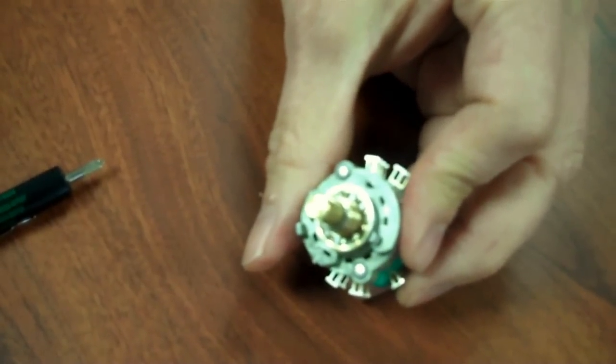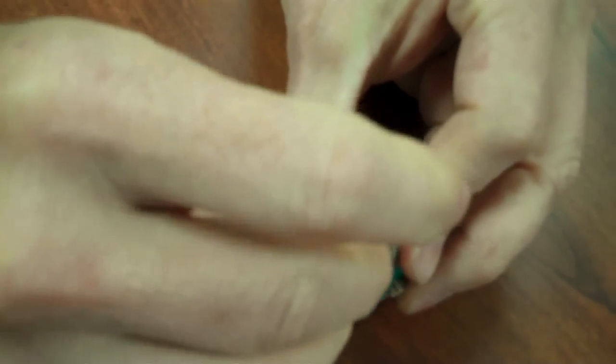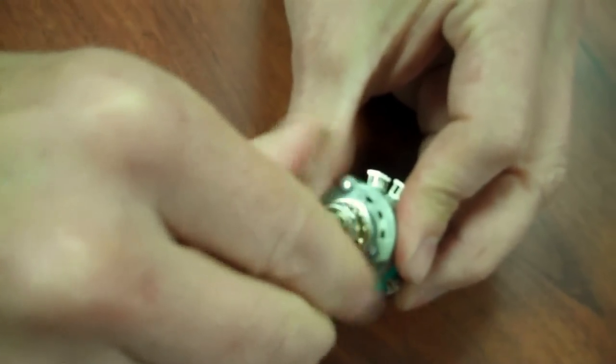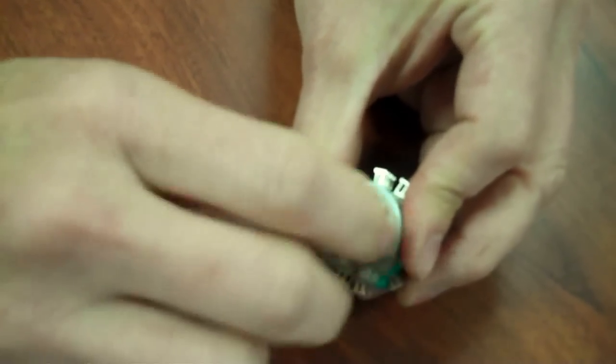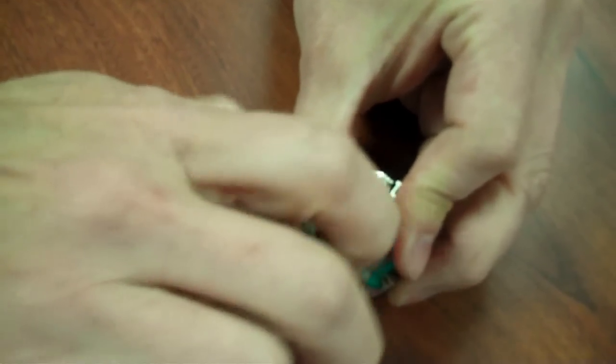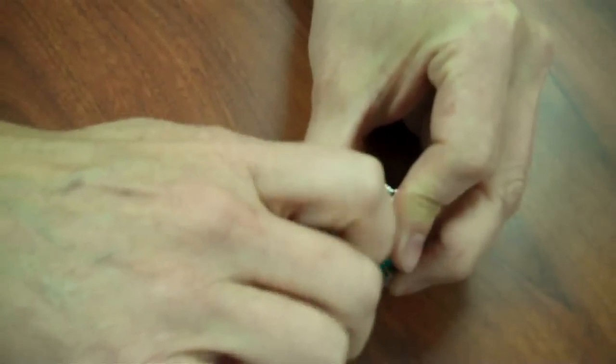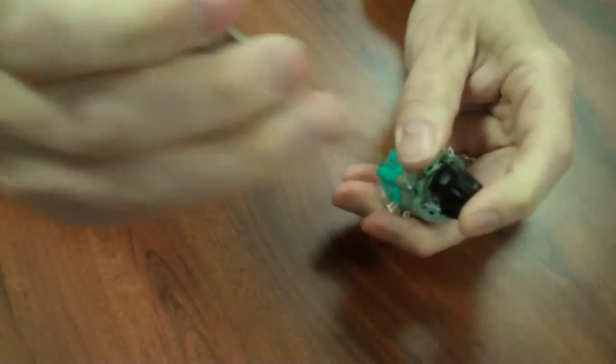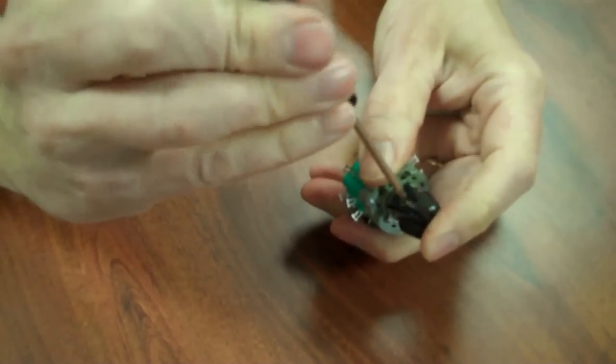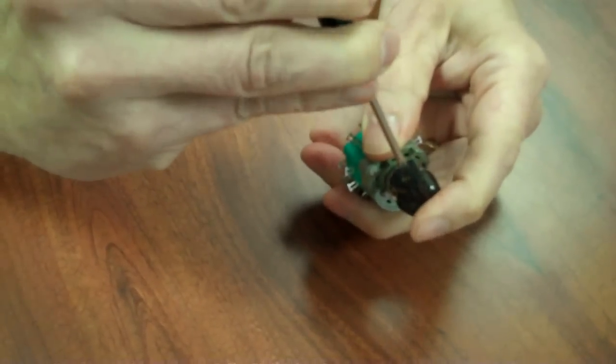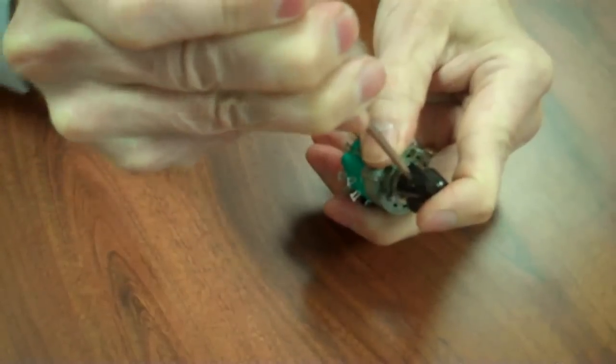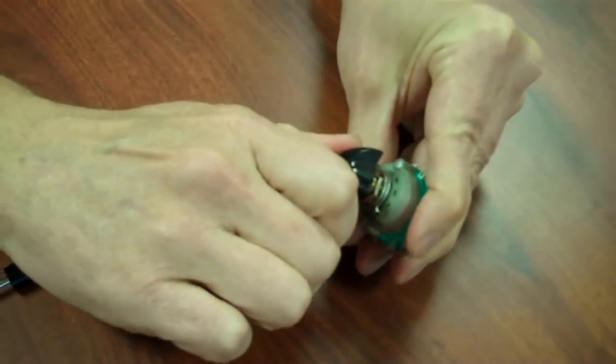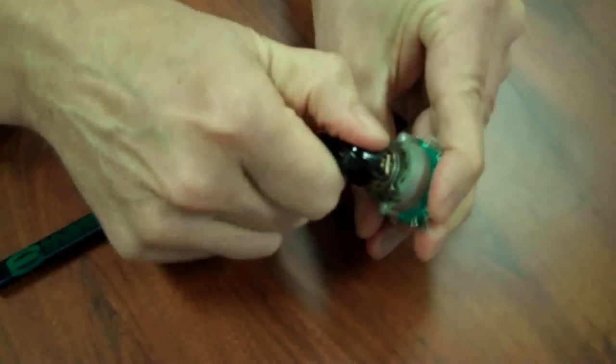Put the lock washer back on and the nut. Put your knob back on and it should be set in the five position. One, two, three, four, five.